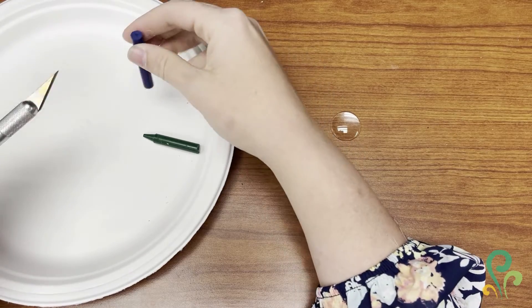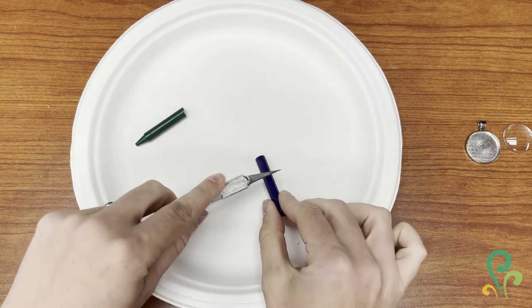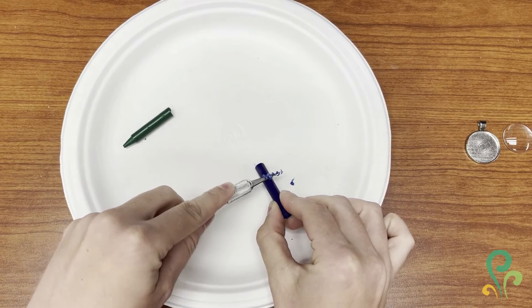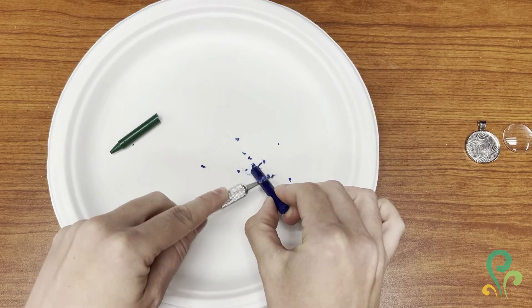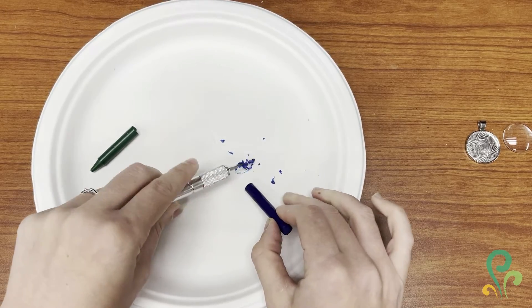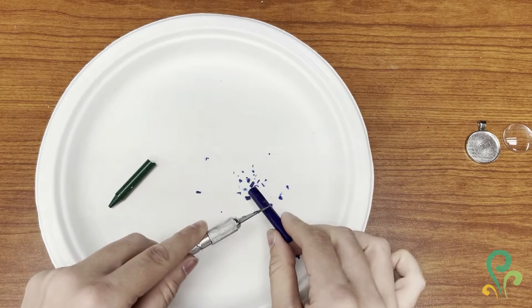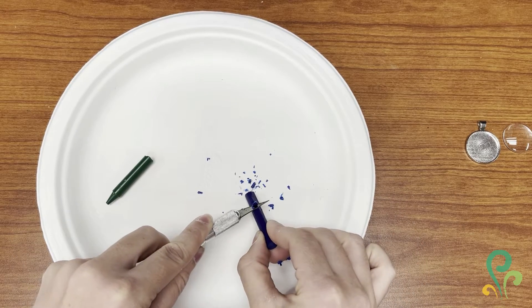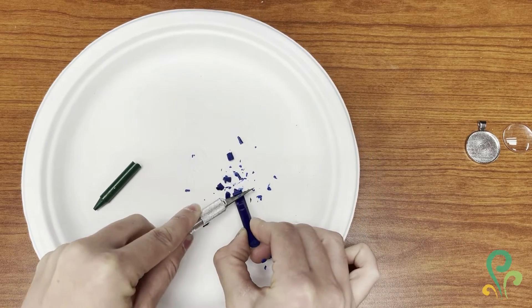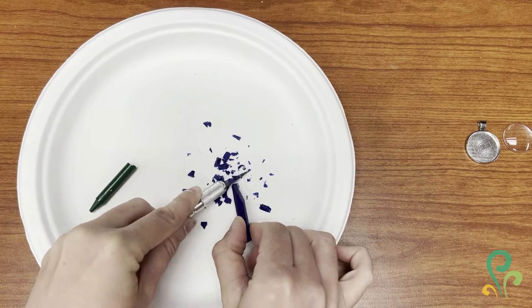I'm going to take my exacto knife, let's get my other materials out of the way so you can watch. I'm just going to make little itty bitty shavings. You always want to work away from you just because that is safest, and you'll get these little tiny shavings. If you work on a piece of paper that might be easier because then you can fold up the paper to put your shavings in your piece to melt.